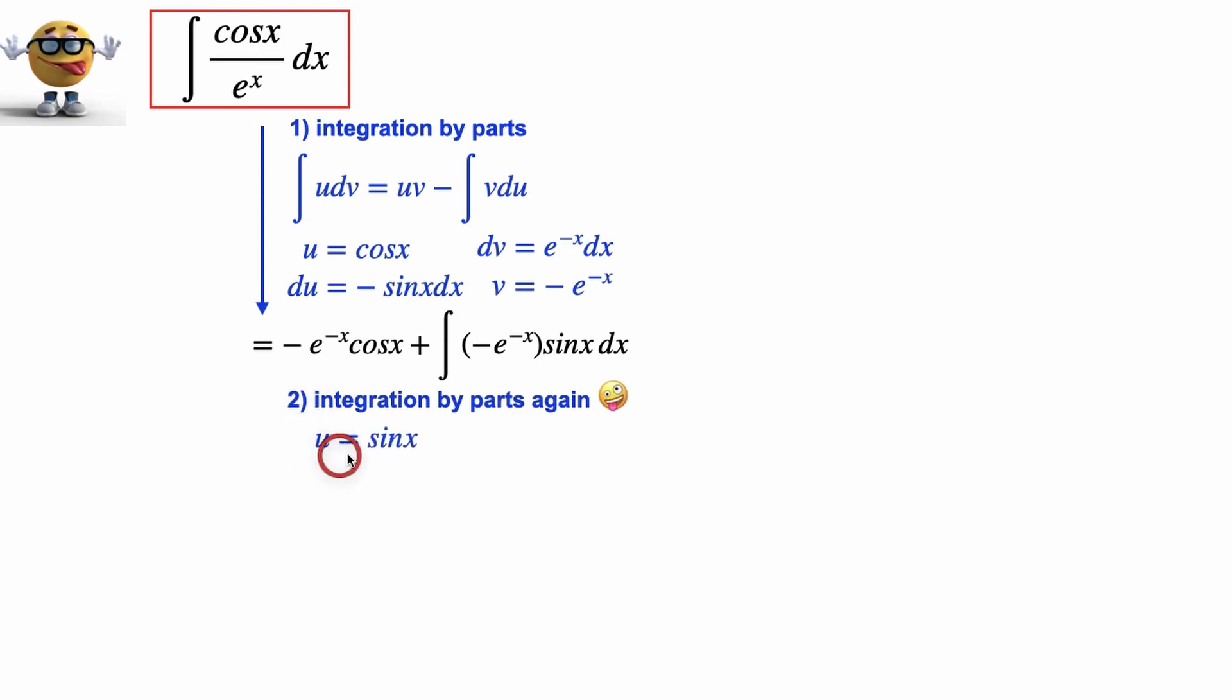We set u equal to sin of x, dv equals to negative e to the negative x, this part right here. If we take the derivative, du equals cos x dx, and then integrate dv to get v equals e to the negative x.